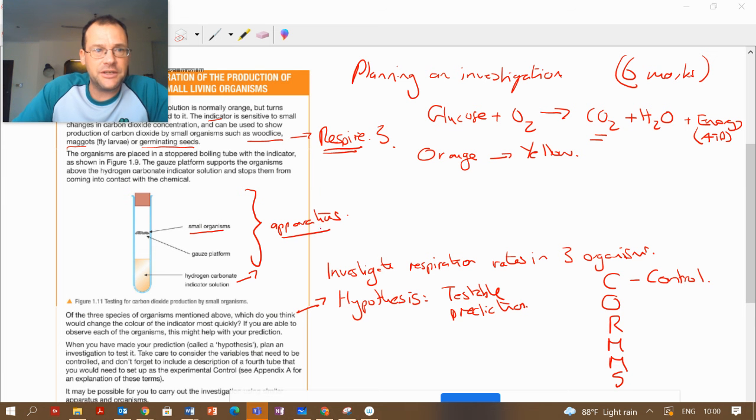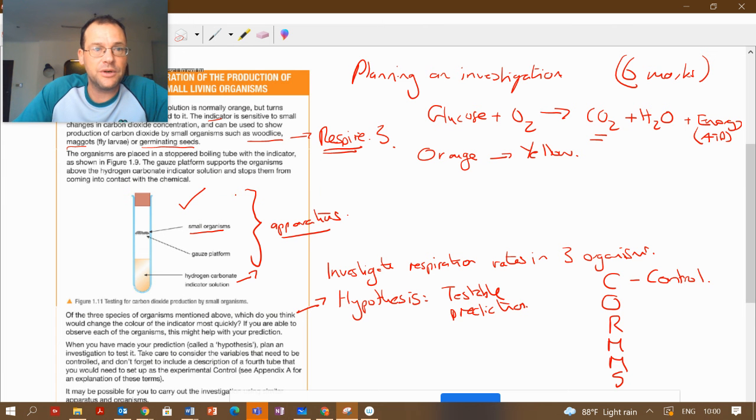The C in CORNS stands for control. Control in this case, the control might be an investigation set up like this one but without any organisms, so no organisms used. This would give us an idea of actually does the CO2 present in the tube without any organisms respiring, does that turn the indicator orange to yellow. So if it does, there's something wrong with our experiment or we need to change something and maybe absorb that CO2 somehow in the tube to make it a better investigation. We have to include a control in this case, especially with living organisms.